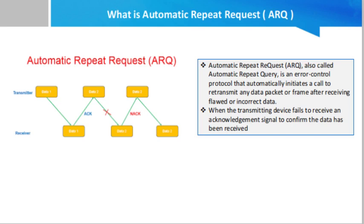Automatic Repeat Request (ARQ), also called Automatic Repeat Query, is an error control protocol that automatically initiates a call to retransmit any data packet or frame after receiving flawed or incorrect data. When the transmitting device fails to receive an acknowledgement signal to confirm the data has been received, it usually retransmits the data after a predefined timeout and repeats the process a predetermined number of times until the transmitting device receives the acknowledgement. ARQ is often used to assure reliable transmissions over an unreliable service.